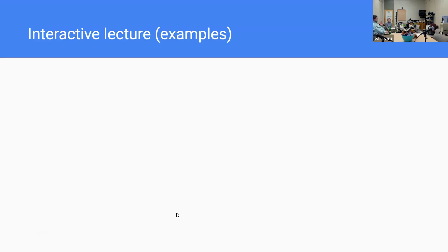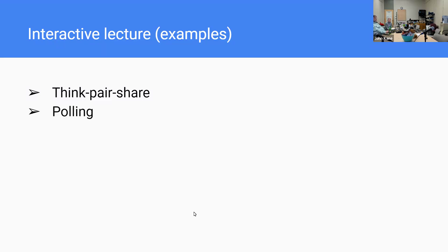One of the lowest levels of active learning is interactive lecture, where you might mostly lecture but break it up by throwing in some think-pair-share exercises. Those are very simple and can be used pretty much at any time. You could also use polling to break up a lecture. In both of these, you're getting students to reflect on the material, trying to apply it, and sharing it somehow.